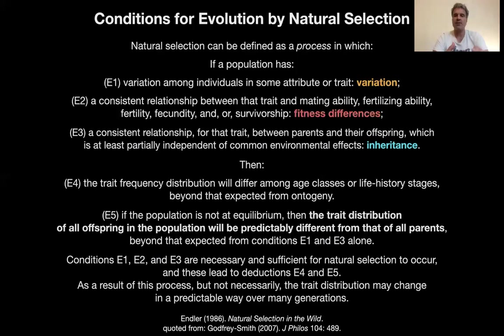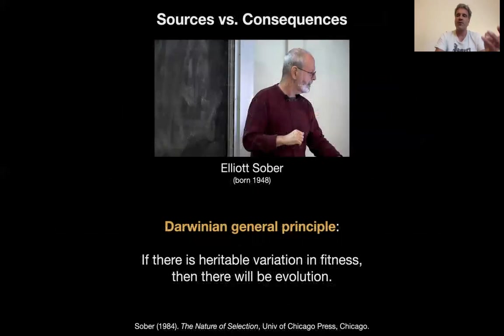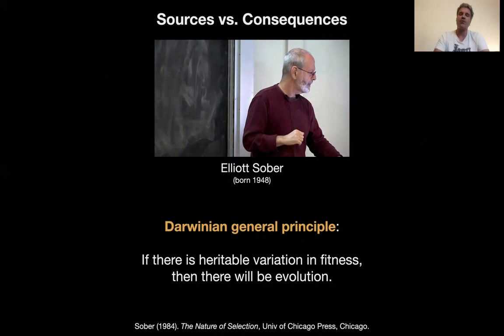These summaries show that the core of evolutionary theory — evolution by natural selection — can be formalized as a logical argument. The details are quite difficult, and there are always counter-examples to simple definitions. But both very simple definitions make clear that variation, the source of variation, is of utmost importance. Even simpler: Elliot Sober, in his book The Nature of Selection, states his "Darwinian general principle": if there is heritable variation in fitness, then there will be evolution. This is the shortest summary I've found of evolutionary theory.